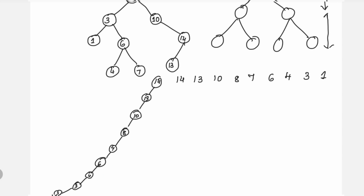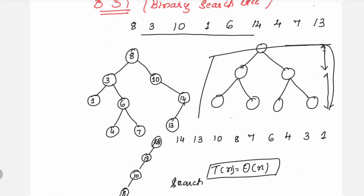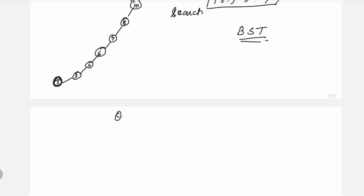If the resulting binary tree is in this skewed form, searching an element is going to take more time. Suppose you want to search element 1 — you have to traverse from the root node all the way to the bottom. This is simply like linear search, with time complexity theta of n. In the case of the binary search tree, the time complexity can be theta of n in the worst case, or theta of log n in the average case.